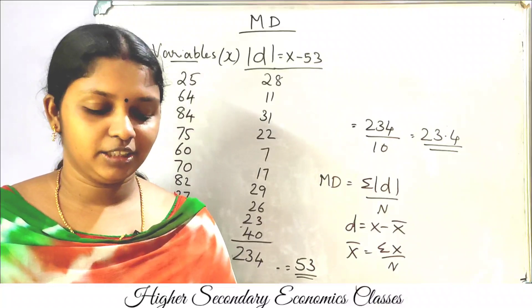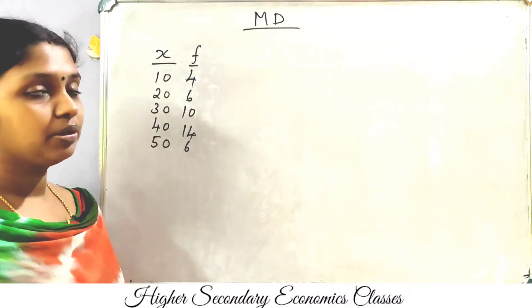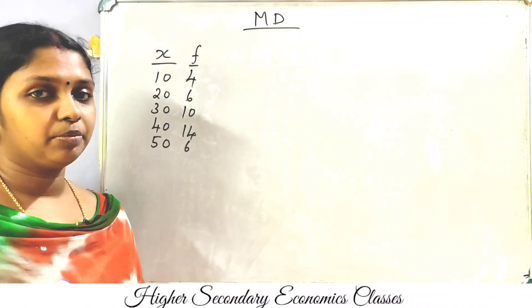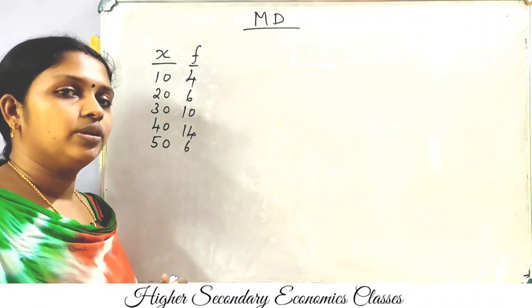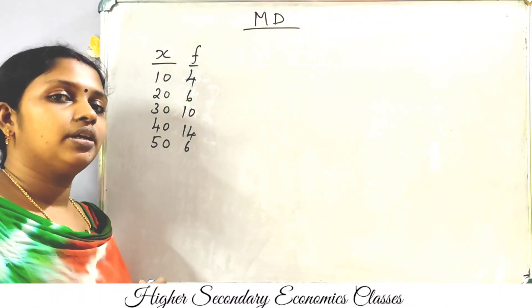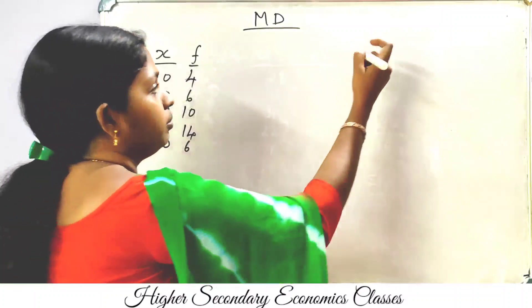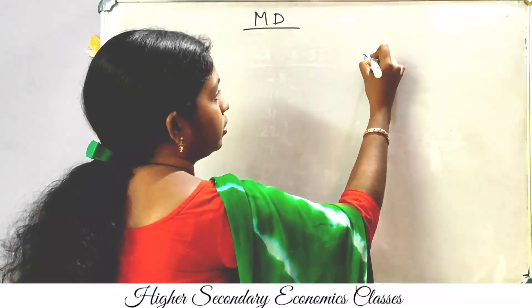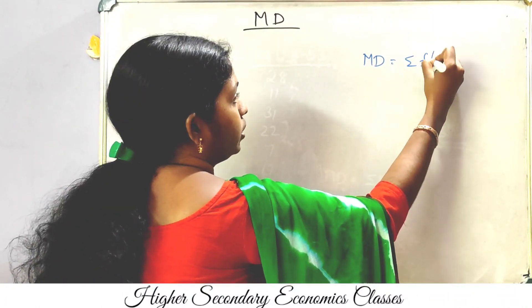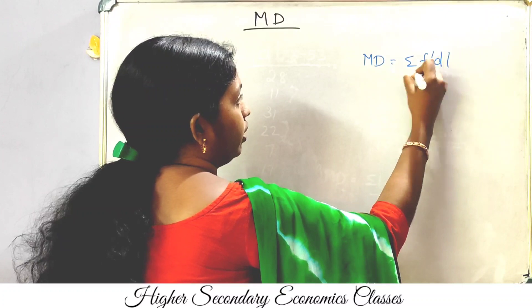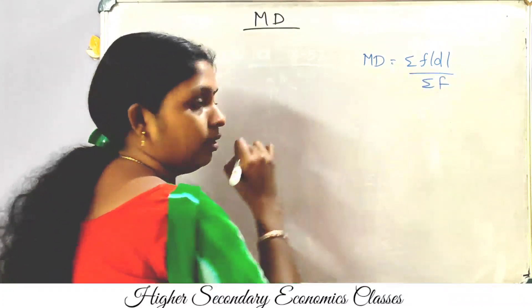This is the discrete series. The discrete series will be asked in exams. The mean deviation formula for discrete series is: mean deviation equals sigma f modulus d divided by sigma f.